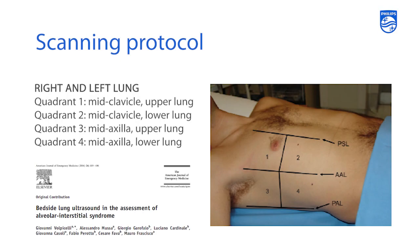The next step in performing a lung ultrasound is to have a scanning protocol. There are different protocols, but the one described here is a four-segment protocol on each side of the chest. You have your parasternal line, your anterior axillary line, and a posterior axillary line in the back, and you draw one line under the nipple around the fifth intercostal space, giving you four quadrants on each side of the chest.